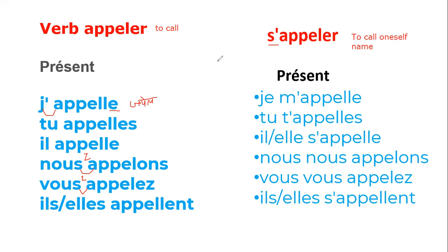But in case of the pronominal verb, we just add a reflexive pronoun — that is: me, te, se, nous, vous. You must be noticing why we put double-L in some forms and single-L in others. In the singular forms — j'appelle, tu appelles, il appelle, elle appelle — there is a double-L. But in the case of 'nous' and 'vous', there is a single-L. And again in the third person plural, there is a double-L. You need to memorize this pattern.